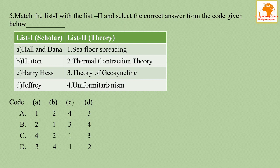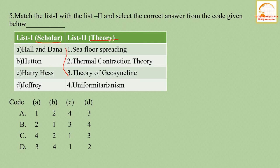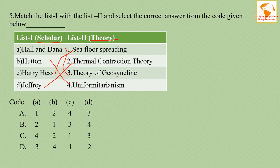Question number five: match list one with list two and select the correct answer from the code given below. List one has scholars and list two has theories. Hall and Dana propounded the theory of geosyncline; Hutton propounded the theory of uniformitarianism; Hess propounded the theory of sea floor spreading; and Jeffreys propounded the theory of thermal convection. The correct answer is option D.